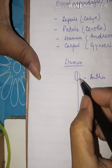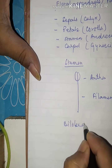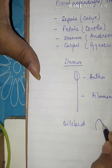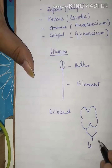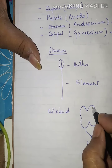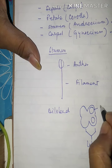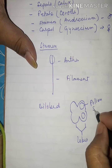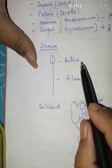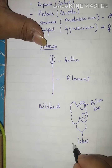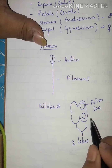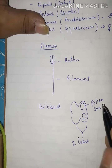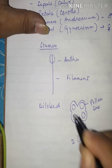The anther is a bilobed structure — it consists of two lobes. Each lobe contains two pollen sacs. So altogether, a single anther consists of four pollen sacs.